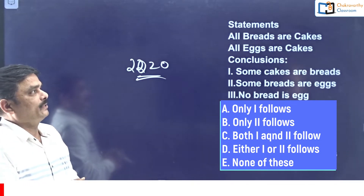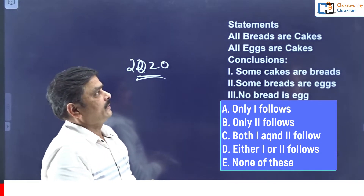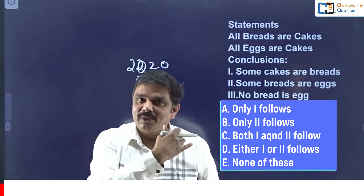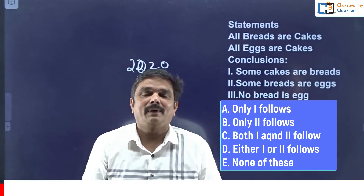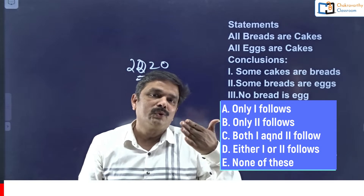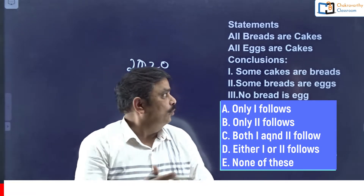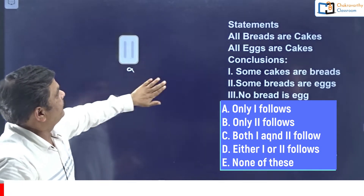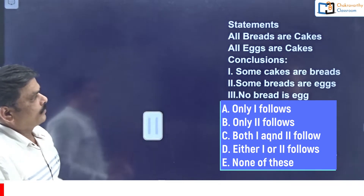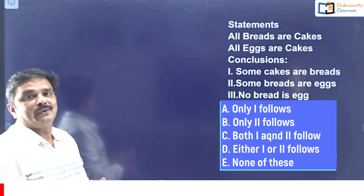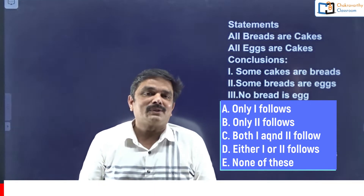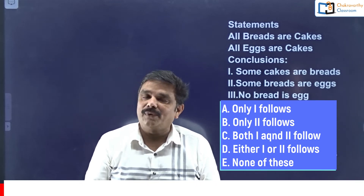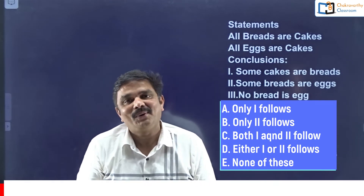Start with the reasoning section. In this session I am going to discuss five questions from that paper from the syllogism chapter. After that we may go for two or three other questions as well, including blood relation questions. We will take three sessions for reasoning and three sessions for quantitative aptitude.